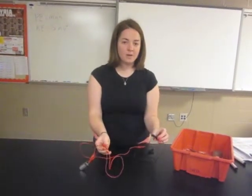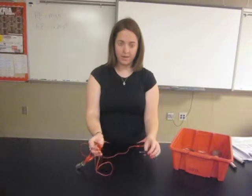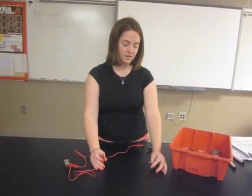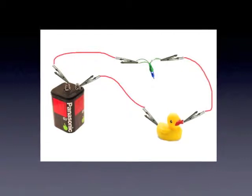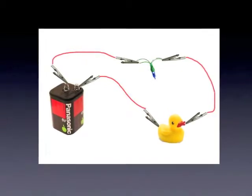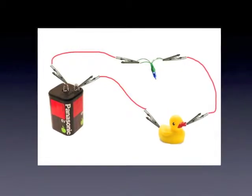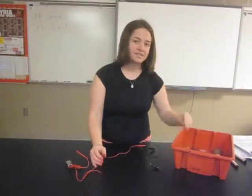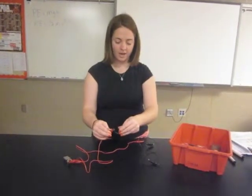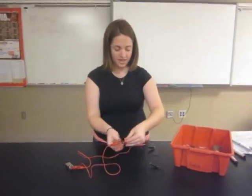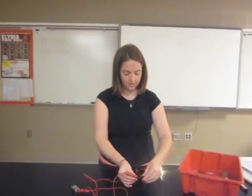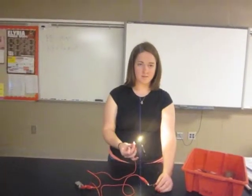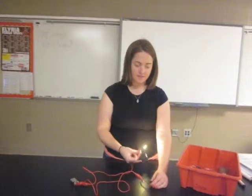You will need a third wire to hook from the battery to the object. You now have two open ends where you can place a variety of objects to test them to see if they are conductors or insulators. The first one we are going to test is the copper wire. I am going to hook one end to this side and the other end to the other side. We can see that the light bulb lights up, so it is a conductor of electricity.